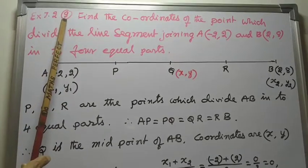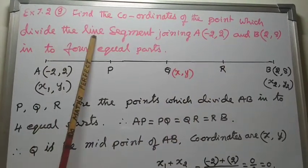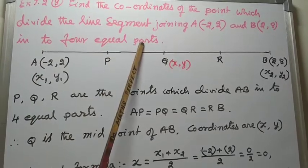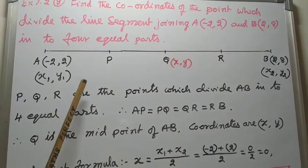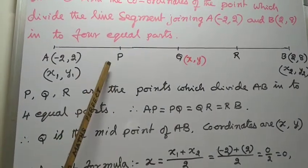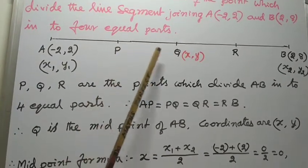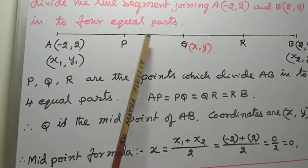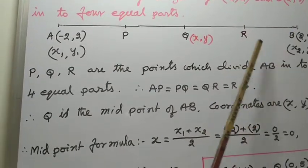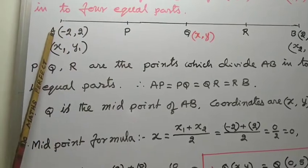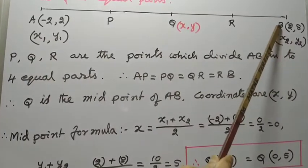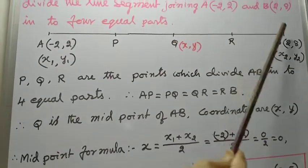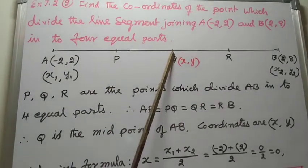Exercise 7.2, ninth problem. Find the coordinates of the points which divide the line segment joining A(-2, 2) and B(2, 8) into 4 equal parts. We are going to find the coordinates of three points P, Q, and R. These three points divide line segment AB into 4 equal parts: AP equal to PQ equal to QR equal to RB. Coordinates of A are (-2, 2) as X1, Y1, and B are (2, 8) as X2, Y2. Q is the midpoint of AB.